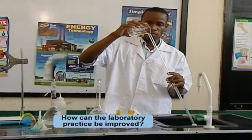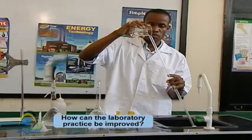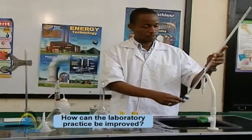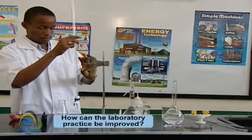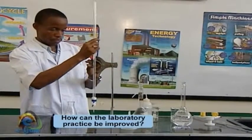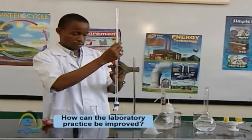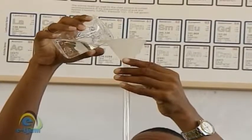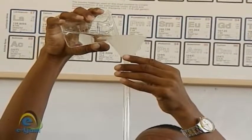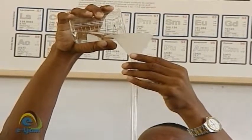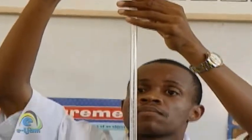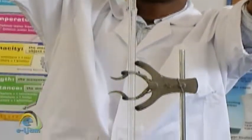Rinse the burette with a little of the hydrochloric acid solution. Clamp the burette vertically using a burette clamp and retort stand. Place a filter funnel in the top of the burette and fill just below the zero graduation mark with hydrochloric acid, ensuring a continuous column of liquid from tip to meniscus.